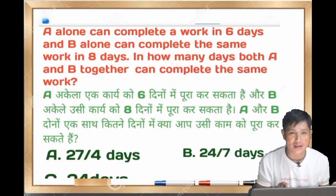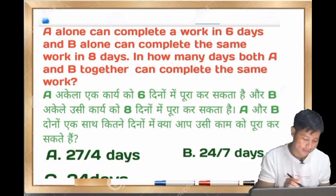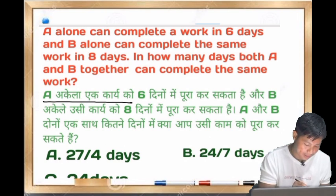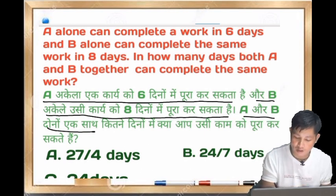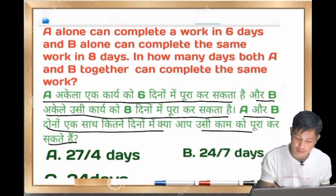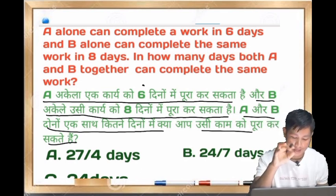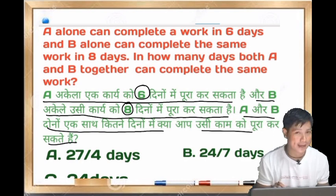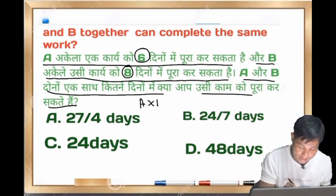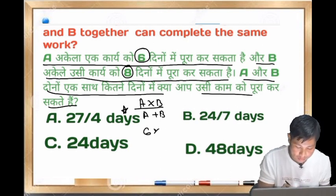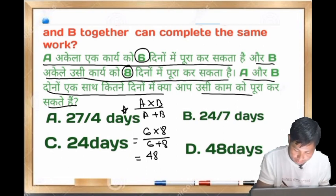Next question is time and work. A can do a work in 6 days and B can do the same work in 8 days. How many days will A and B together take? The formula is A into B divided by A plus B. So six into eight divided by six plus eight equals 48 divided by 14.